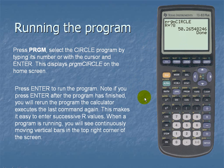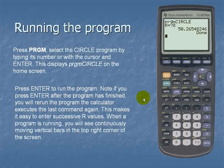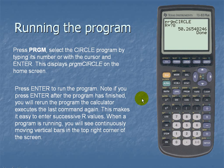We press enter to run the program. Notice if you press enter after the program has finished you will return to the program and the calculator will execute the last command. This makes it easy to enter successive R values. When a program is running you will see continuously moving vertical bars in the top right corner of the screen.